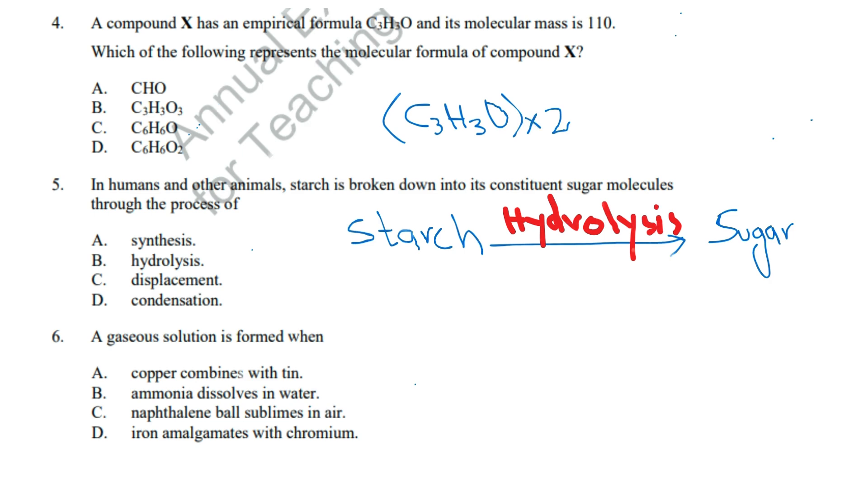Question 4: The molecular formula is obtained by multiplying the empirical formula by 2. C3H3O times 2 equals C6H6O. Correct answer: C, C6H6O. Question 5: Hydrolysis is the breakdown of starch into glucose using water. Correct answer: B, Hydrolysis.